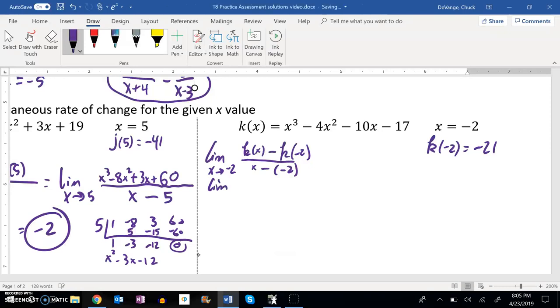So this is the same as saying the limit as x approaches negative 2 of k of x is this, x cubed minus 4x squared minus 10x minus 17 minus this specific y value, which is negative 21, and that's over x minus negative 2, so plus 2.